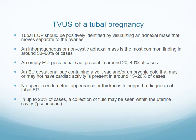On transvaginal scan of a tubal pregnancy, we can expect different findings. The most frequent, accounting for 98%, is tubal pregnancy, where we find an adnexal mass that moves separately from the ovaries. This can present in three ways: an inhomogeneous or non-cystic adnexal mass, which is the most common; an empty gestational sac; or a gestational sac containing a yolk sac and embryonic pole.